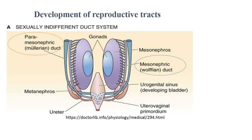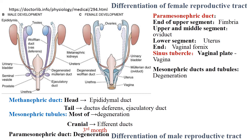In the development of the reproductive tracts we can distinguish sexually undifferentiated and differentiated duct systems. Pay attention to the two sources: the paramesonephric duct and the mesonephric (Wolffian) duct. From the paramesonephric duct appear the fimbria, oviduct, uterus, and vaginal fornix; the mesonephric duct and tubules degenerate in females. In the male reproductive system, the mesonephric duct gives rise to the epididymal duct, ductus deferens, and ejaculatory duct; mesonephric tubules mostly degenerate but the cranial part gives rise to the efferent ducts; the paramesonephric duct also degenerates.